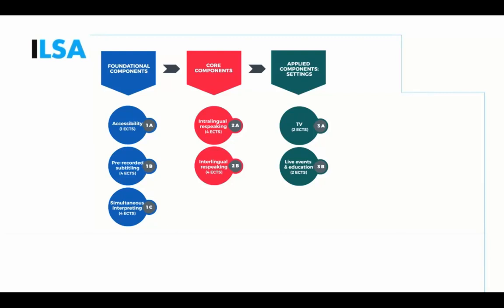The knowledge and skills identified in IO1, IO2, and IO3 relate to pre-recorded subtitling module 1b and to simultaneous interpreting module 1c, and these two modules are worth 5 ECTS each. One ECTS equals 25 to 30 hours of work for students in total, including face-to-face lectures, online lectures, reading, assignments, and tasks. In addition, in line with the project name — interlingual live subtitling for access — a foundational component dedicated to media and live events accessibility has been added as the very first foundational module.